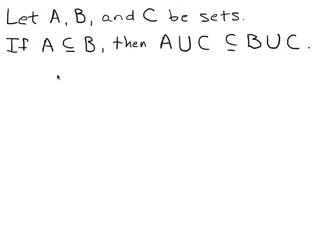We're going to let A, B, and C be sets. If A is a subset of B, then we want to prove that the union of set A and C is also a subset of set B union set C. We're going to write a proof for this, which will involve knowledge of what subsets are.